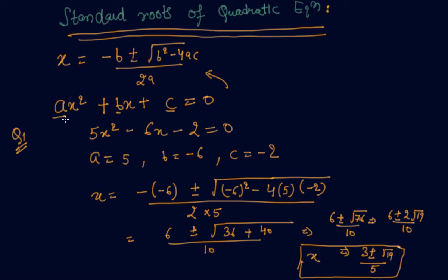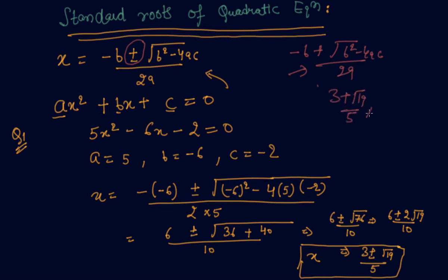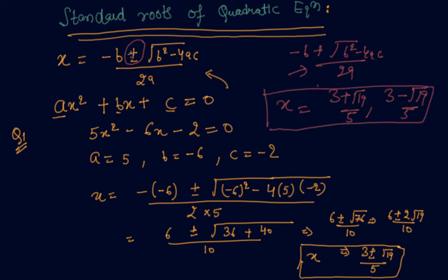Students, do remember that in this formula it is plus minus. Don't forget this — most students make this mistake. They forget to write plus minus and write only minus b plus or minus b. With that error you will get only one root, but in our example the two roots are 3 plus root 19 by 5 and 3 minus root 19 by 5.